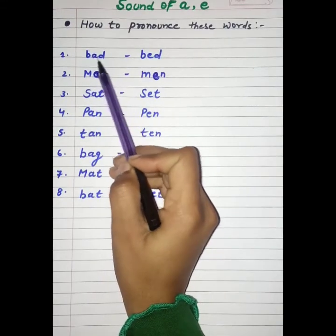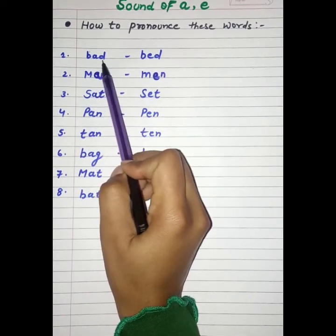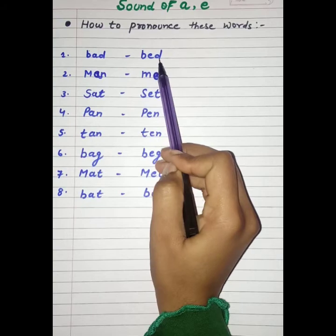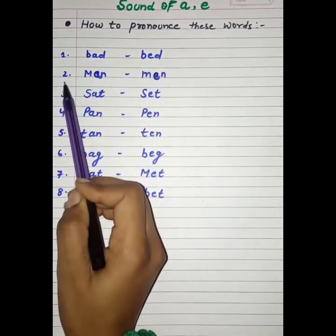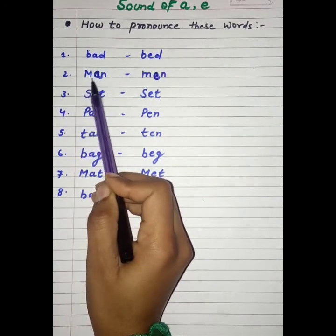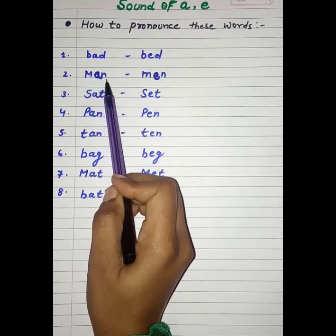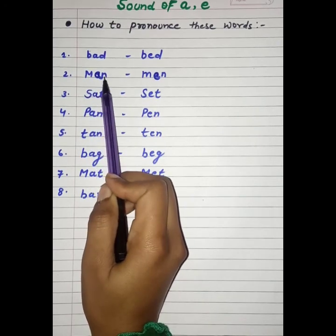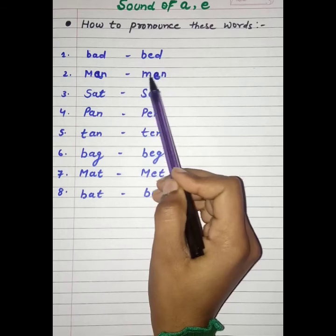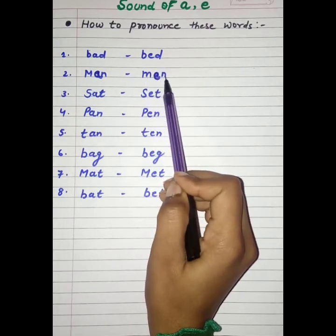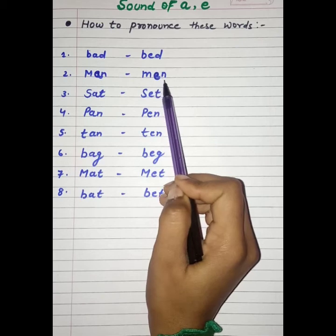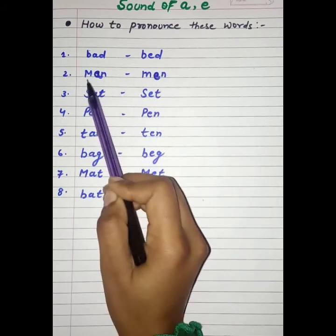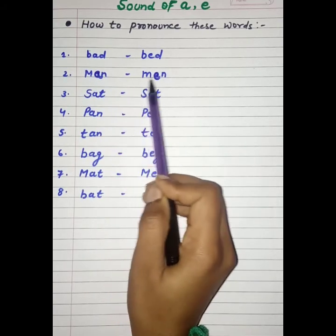In these words the ending is A, D — so its pronunciation is 'ad', and in this word the ending is E, D — so its sound is 'ed'. Now the second one is M, A, N — in this word the ending is A, N, so its sound is 'an' — man. And M, E, N — the ending is E, N, so its sound is 'en' — men.